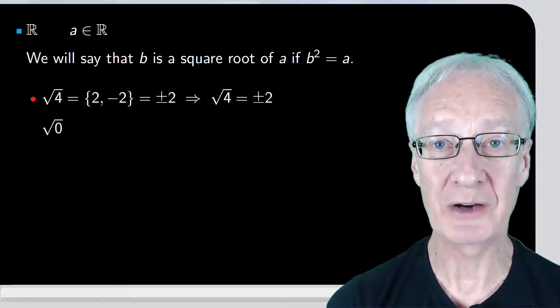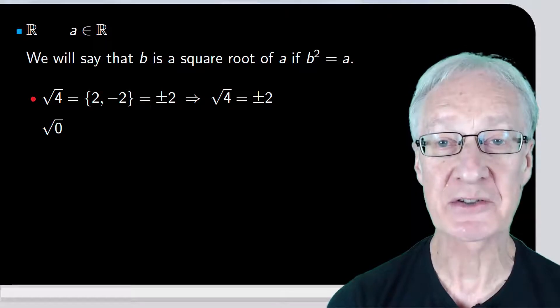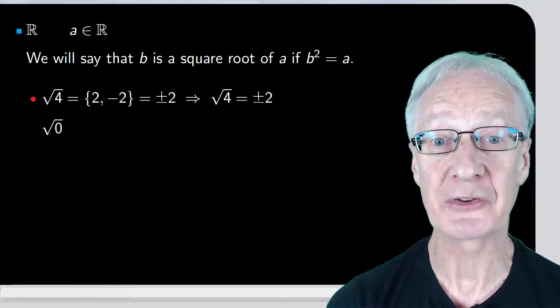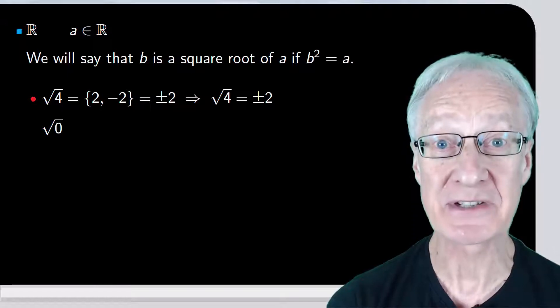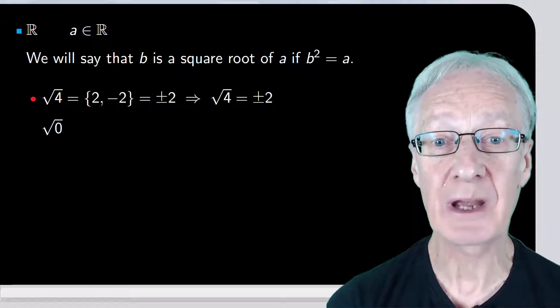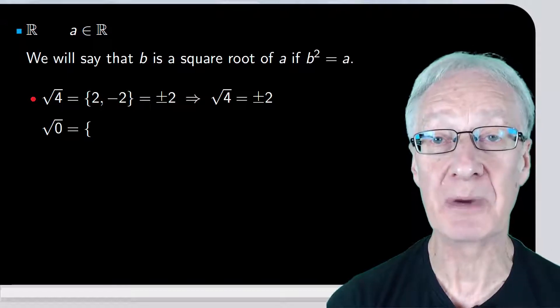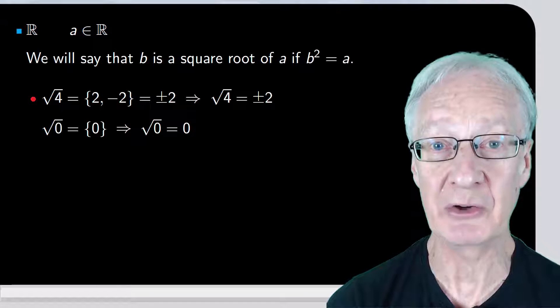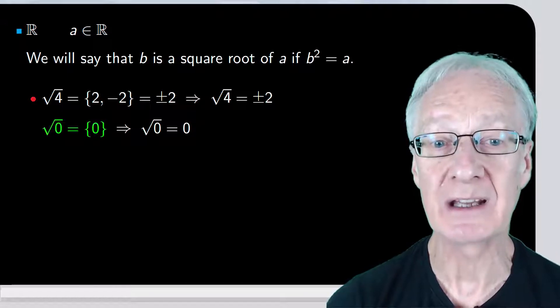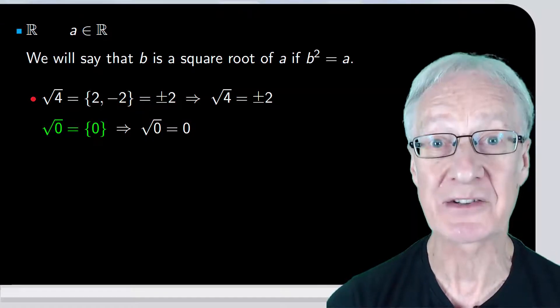What about the square root of 0? Since there's only one real number such that when it's squared, it gives 0 as a result, the answer is 0. So, in this case, the square root is the set formed by only 0. We usually say simply that the square root is 0. But strictly speaking, we should give our answer as a set.